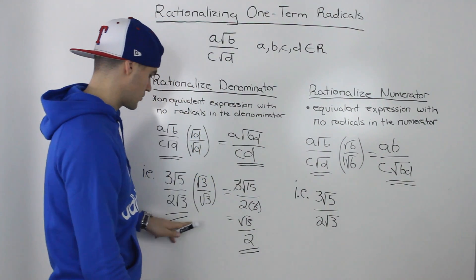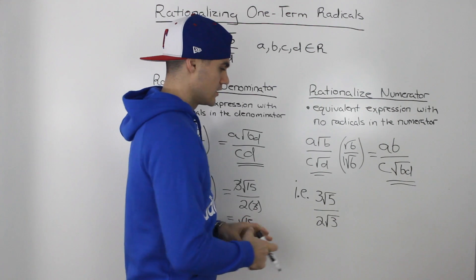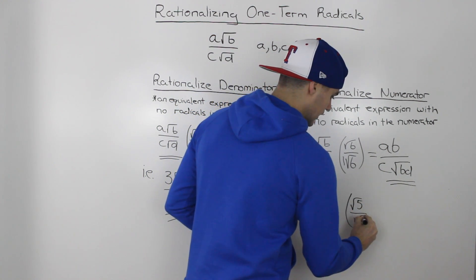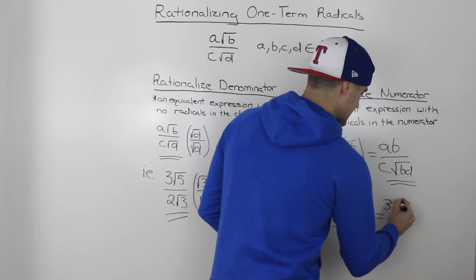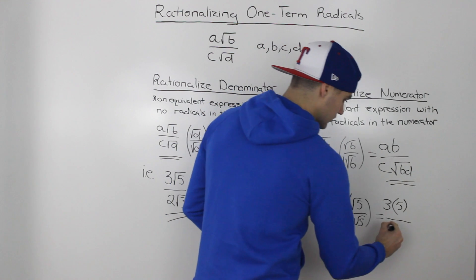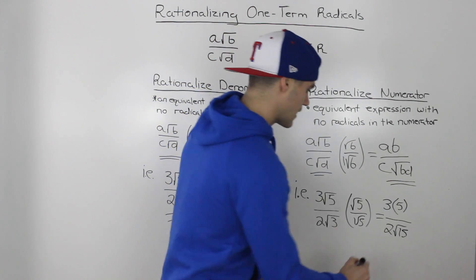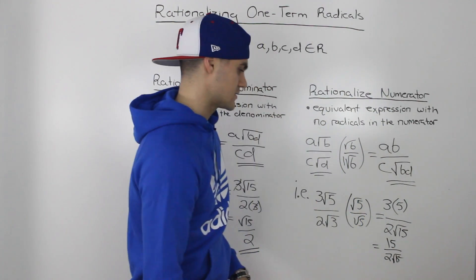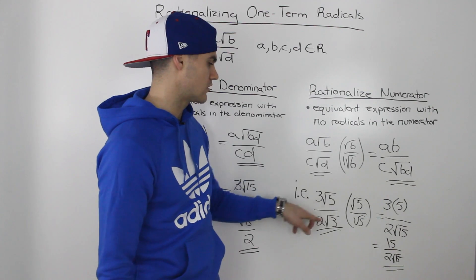Let's take the same expression, 3 root 5 over 2 root 3, but now we're going to rationalize the numerator. We multiply by root 5 over root 5 — it's like multiplying by one. So 3 root 5 times root 5: the 3 just stays as is, and root 5 times root 5 is just 5. For the denominator, 2 root 3 times root 5 — the 2 stays by itself and we get root 15 in the denominator. So 3 times 5 gives us 15 in the numerator, and the denominator stays as 2 root 15. This expression is equivalent to the original, and notice there are no radicals left in the numerator.